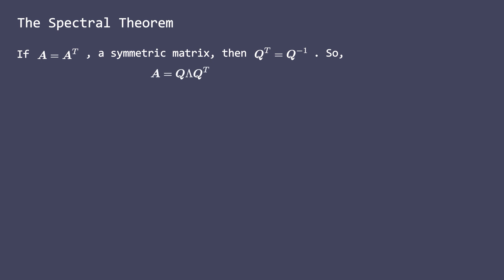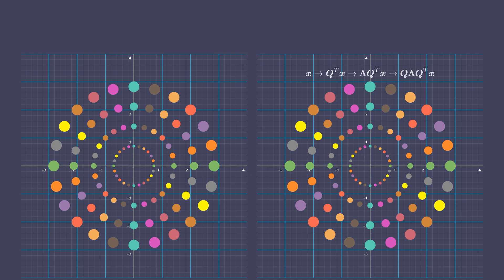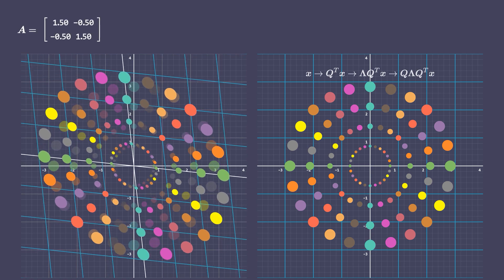In other words, this states that eigendecomposition of a symmetric matrix leads to an orthogonal matrix. Let's see this geometrically, just like we did for eigendecomposition, but with symmetry constraints on A. Let's apply matrix A to the space in the left column.